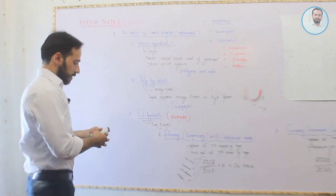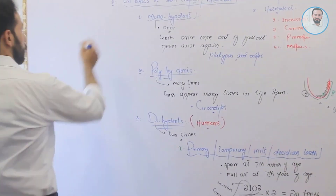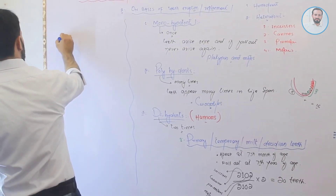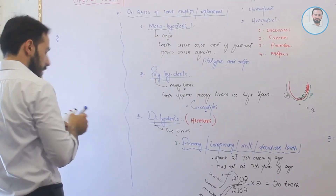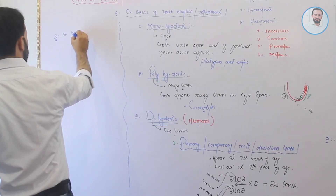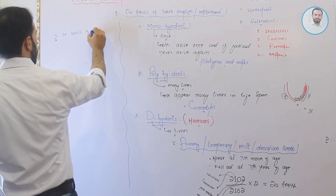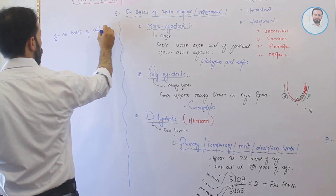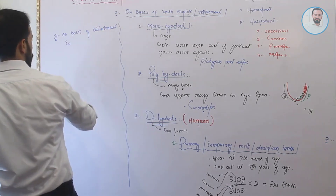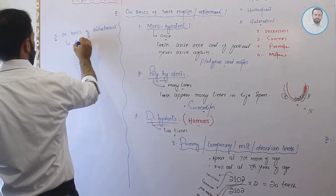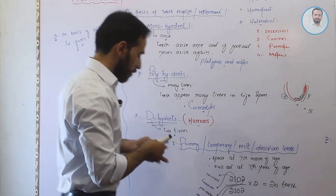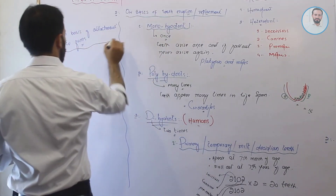We can also classify teeth in a third classification, which is very short. The third classification is on the basis of attachment to gums.